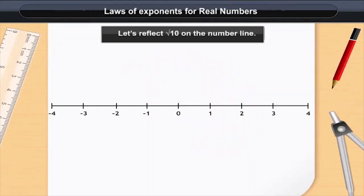That is, we first take a segment OA between 0 and 3 on the number line which is 3 units. Now, we draw a perpendicular AB which is 1 unit. Now, we join OB.